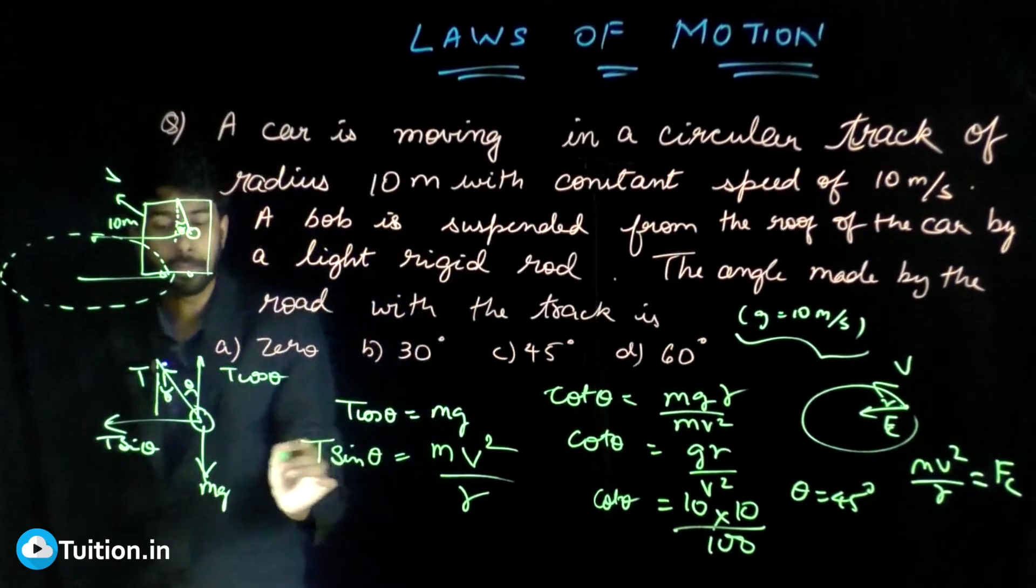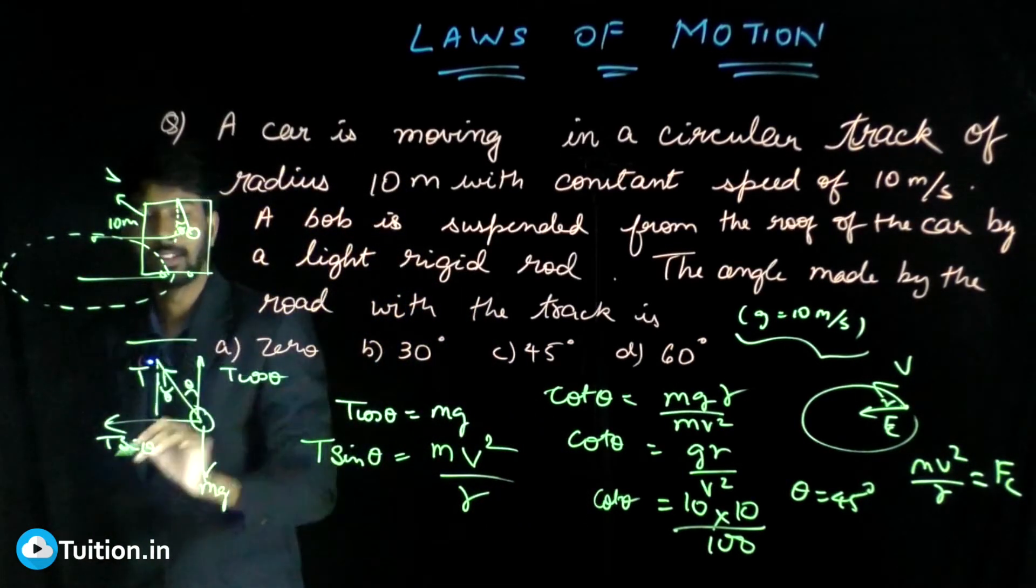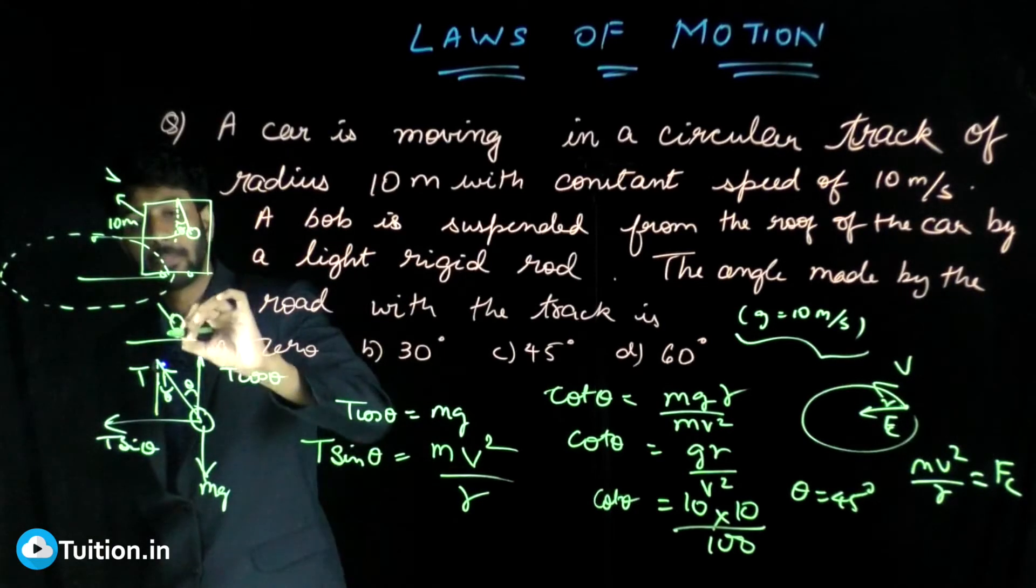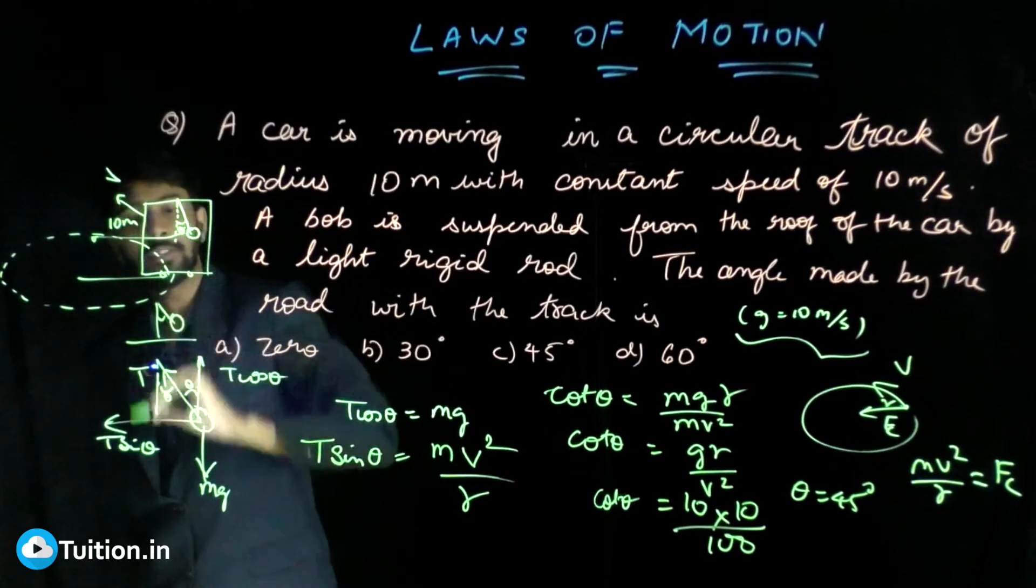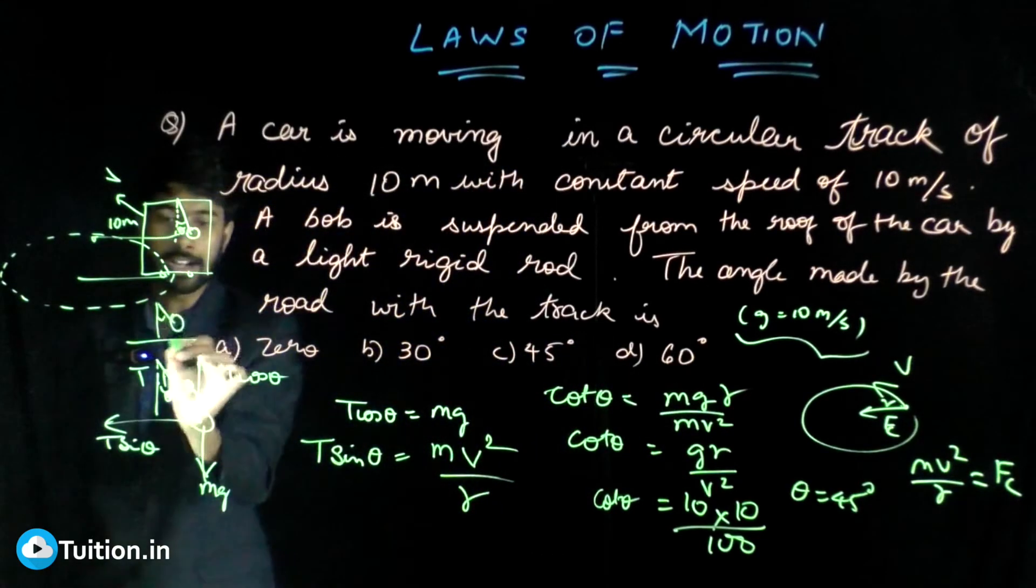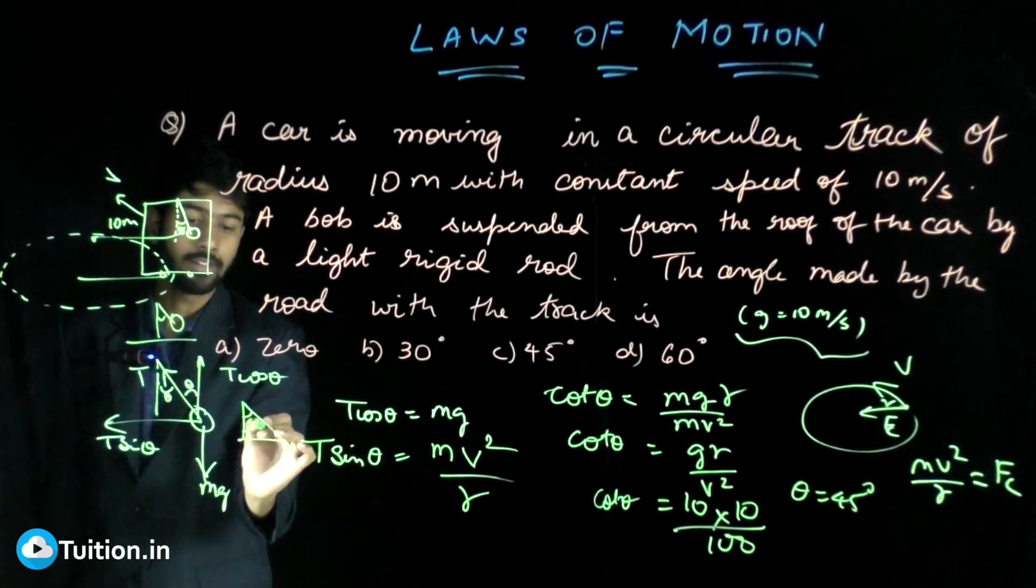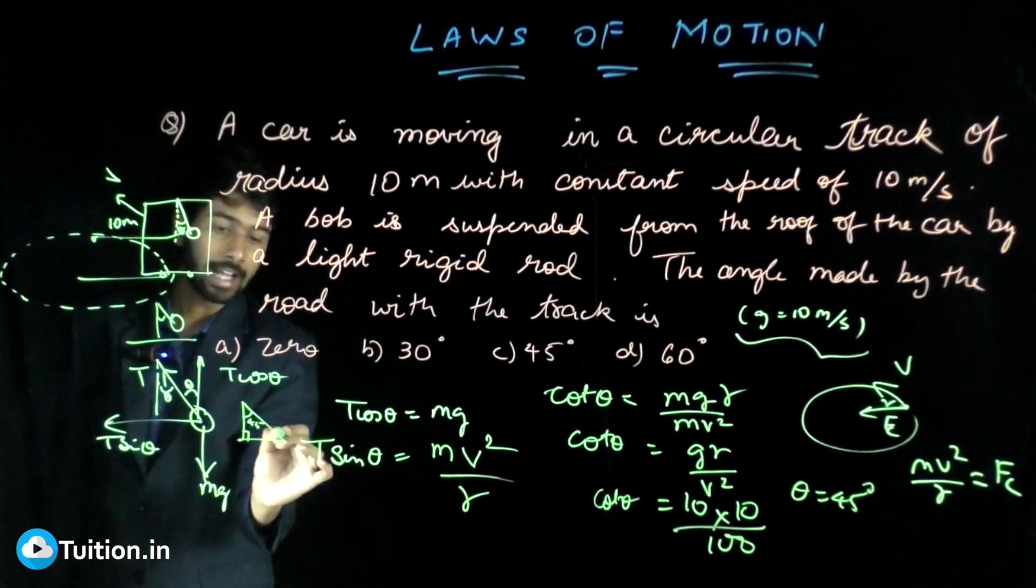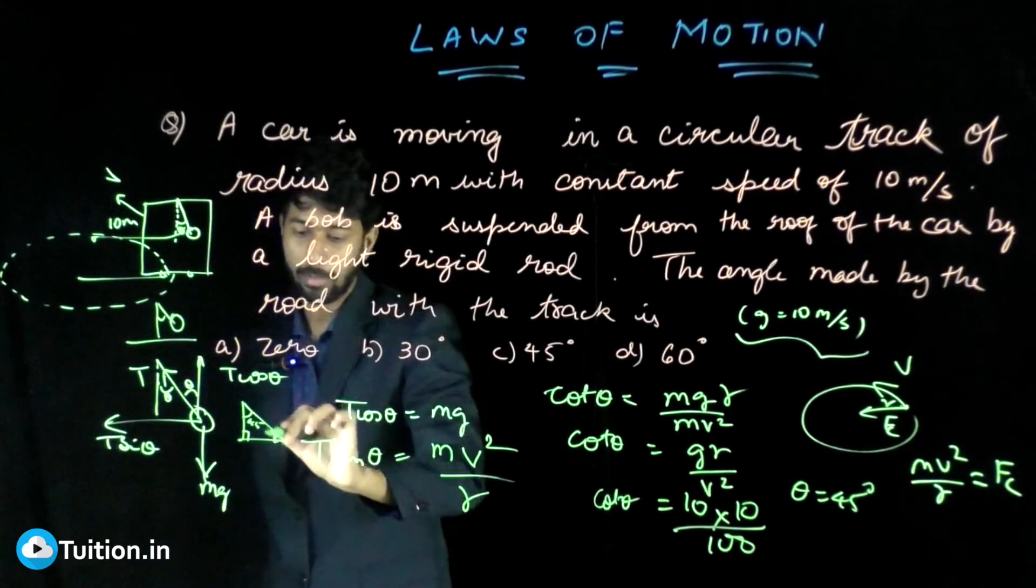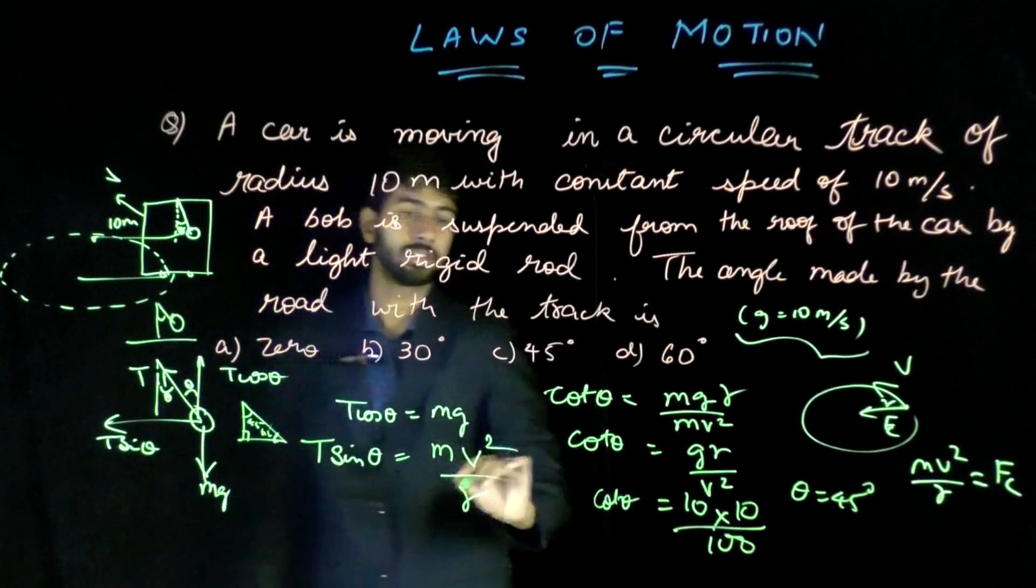So the angle that the bob makes—this is the track, this is your bob—it makes an angle 45 with the vertical. What angle will it make with the track? Because this is a right angle triangle, this is 90, this is 45. What will this angle be? The angle that the rod makes with the track will be the same thing, 45. So the answer to this question is 45 degrees.